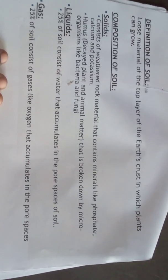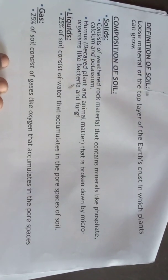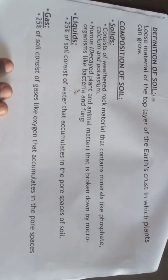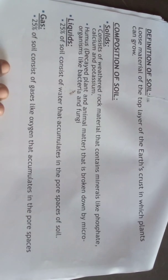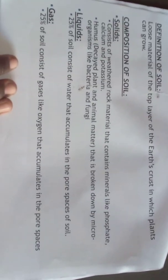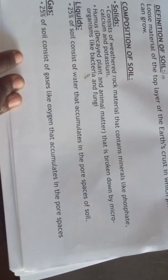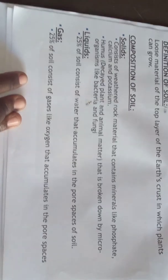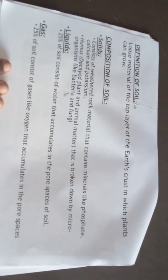What is the composition of soil? Soil consists of solids, liquid, gas, and organic content. When we talk about solids in soil composition, soil consists of weathered rock material containing minerals. It also contains humus — organic content formed by decayed plant and animal matter broken down by microorganisms like bacteria and fungi. Soil also consists of liquids, which is 25 percent — water that accumulates in the pore spaces of the soil. Gas is also 25 percent, consisting of gases like oxygen that accumulate in the pore spaces.